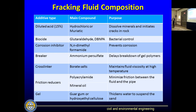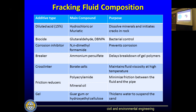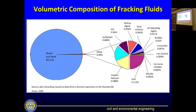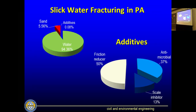Early on we tried to put this in perspective by saying less than half a percent of the total volume injected into the well is chemicals. But considering we're injecting five million gallons of water and 2,000 tons of sand, half a percent is still about 50 tons — that's a lot of chemicals. Nowadays in Pennsylvania, where we exclusively do slick water fracturing, they basically use three chemicals: a friction reducer (mostly polyacrylamide), one antimicrobial agent, and a scaling inhibitor. In that case the additives are less than 0.1 percent — much better than the half percent used in the past.